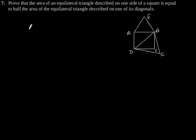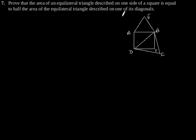Exercise 6.4, Question number 7. Prove that the area of an equilateral triangle described on one side of a square is equal to half the area of the equilateral triangle described on one of its diagonals.